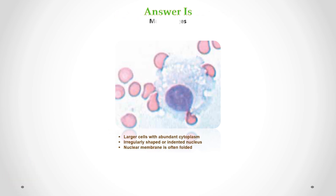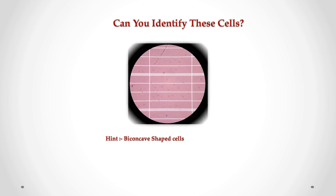Correct answer is macrophages. We can see larger cells compared to lymphocytes and monocytes. They have a distinct irregular or amoeboid shape. The nucleus of macrophages can be round, kidney-shaped, or irregularly shaped. The cytoplasm of macrophages is abundant.